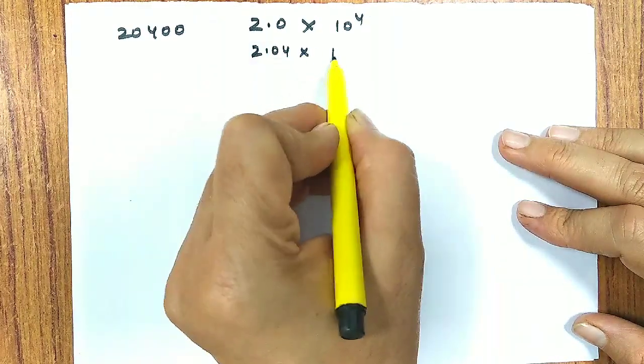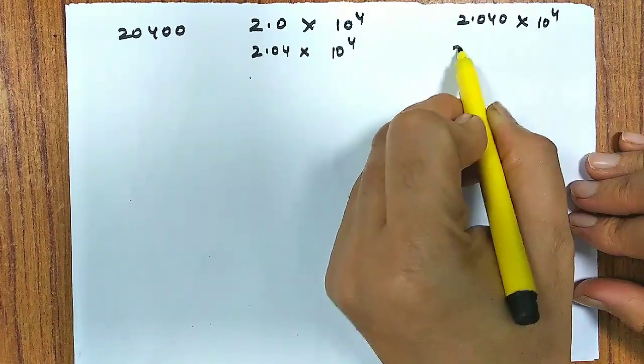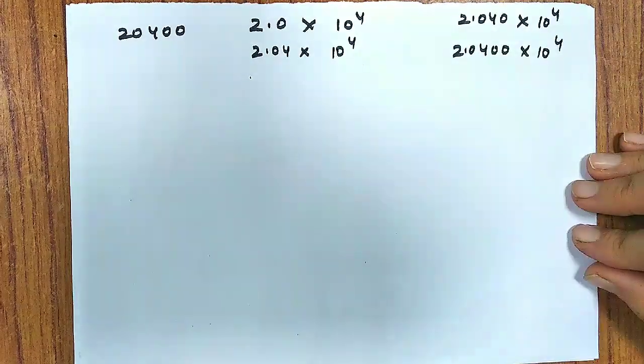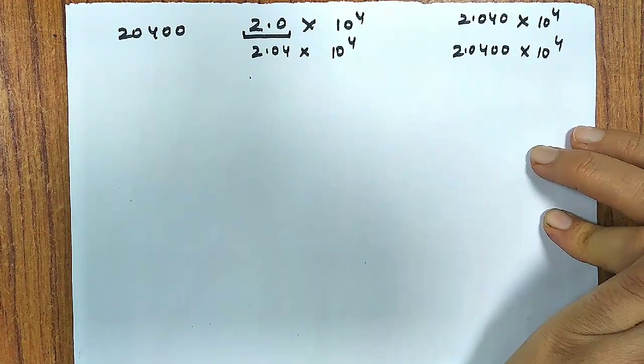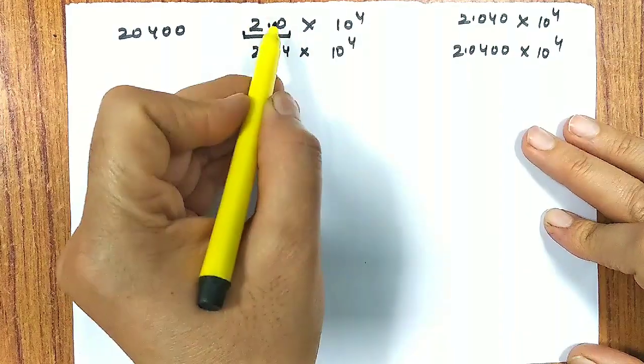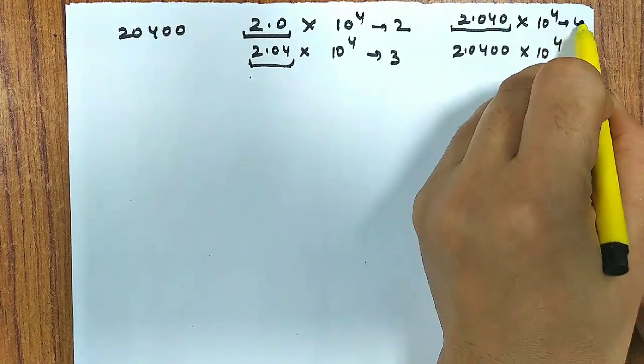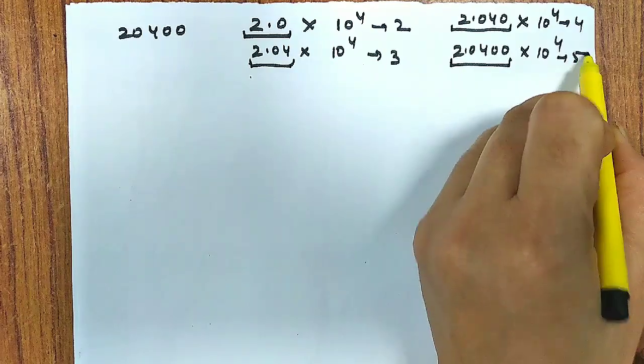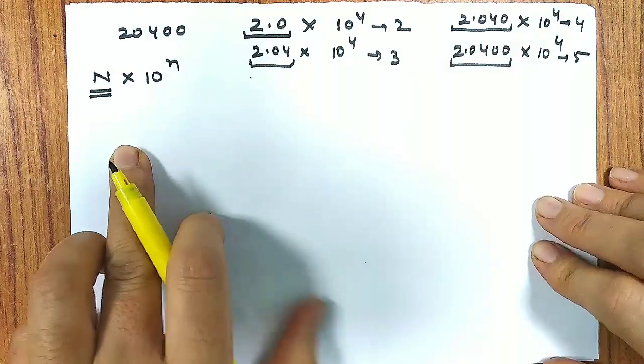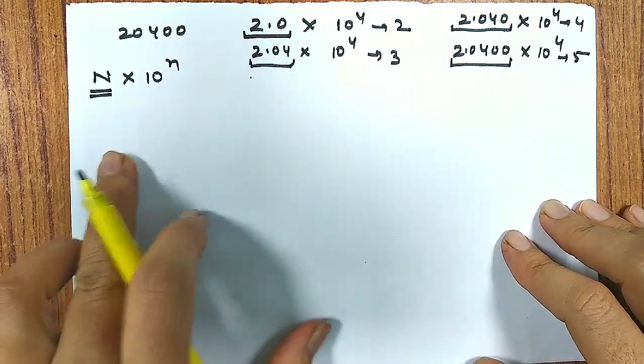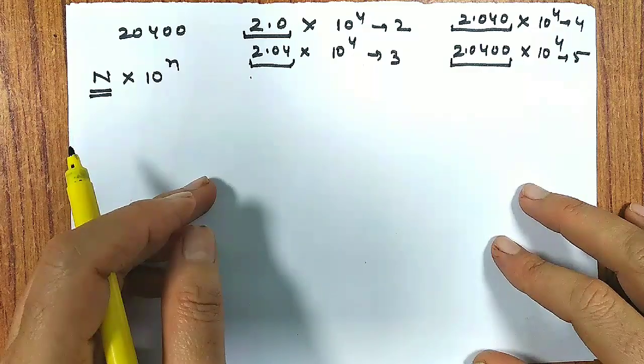Suppose I will be having 20,400. This zero will be considered significant, but what about these two zeros? They end with zero. The whole digit ends with zero but there is no decimal point. Such value can have three, four, or five significant figures counting these zeros. How do we come to know? This ambiguity can be removed when we write such values in scientific notation.